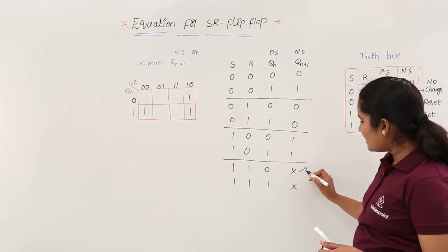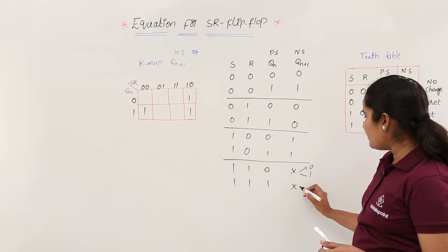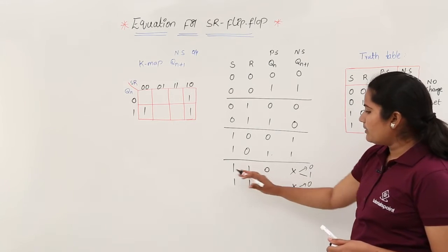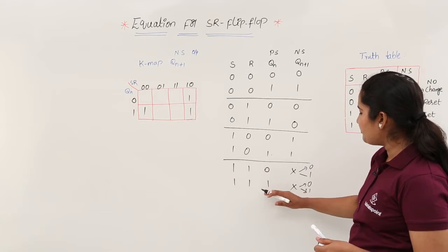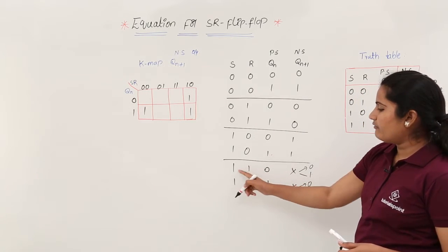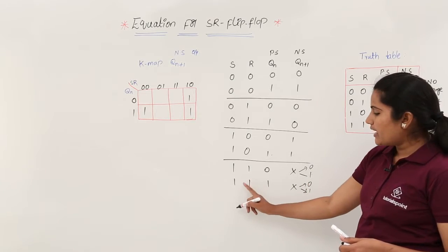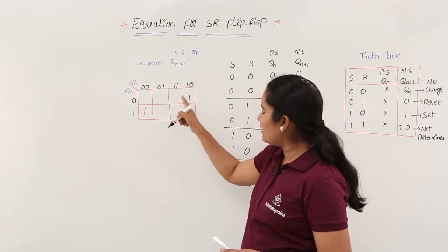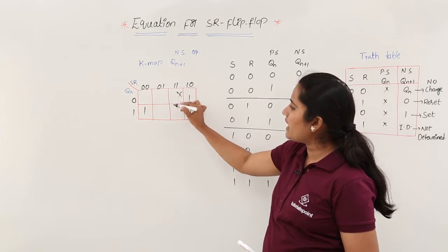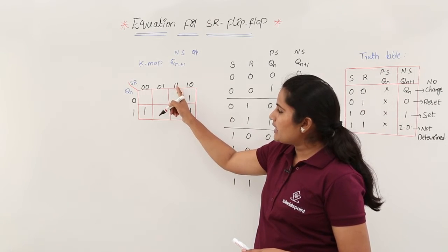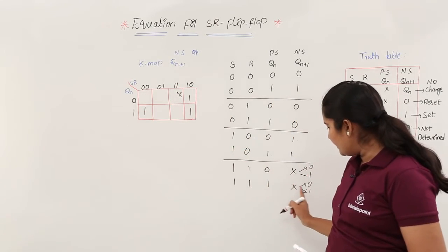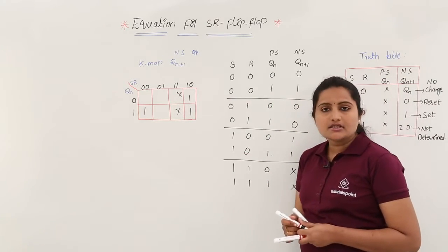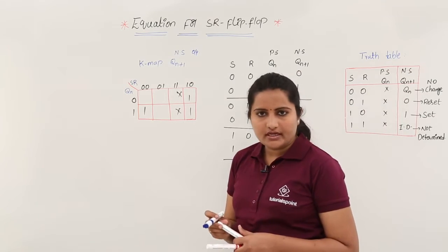The don't cares at SR=1,1 may be either 0 or 1. At SR=1,1 and QN=0, we place a don't care, and at SR=1,1 and QN=1, we place another don't care. So we are considering these don't care (unused condition) cells as 1s for optimal grouping.